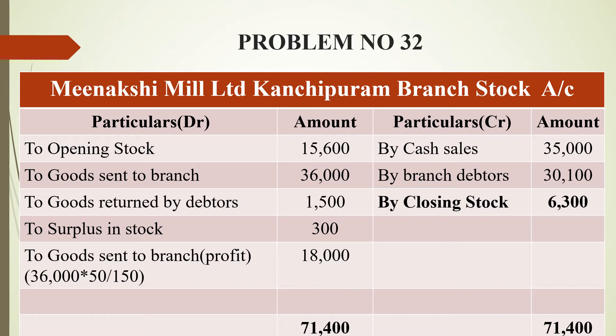That is why we have entries on the debit side. Surplus in stock is also recorded on the debit side. Now we need to find the closing stock — the debit side balance means surplus, which is Rs. 300. On the credit side, cash sales amount to Rs. 35,000.